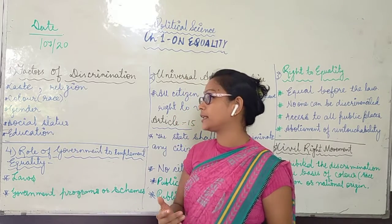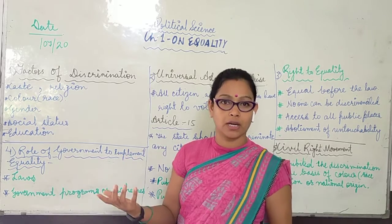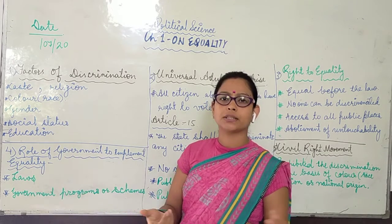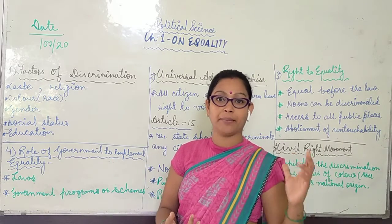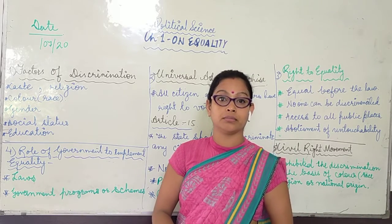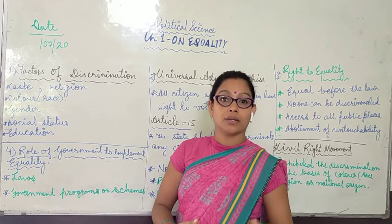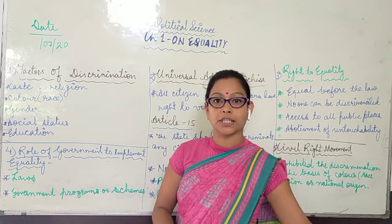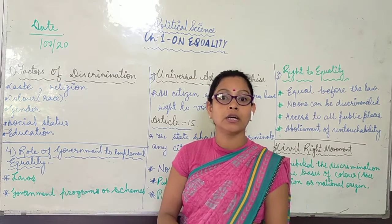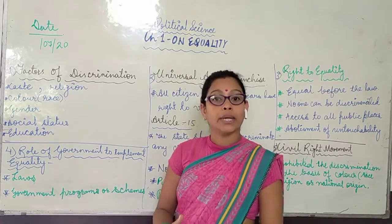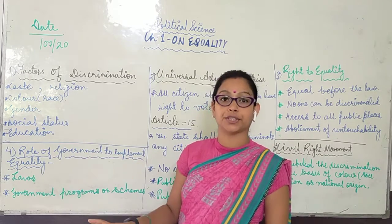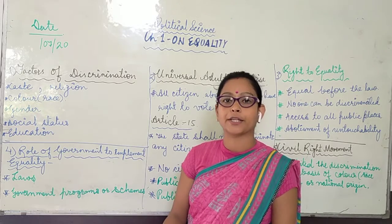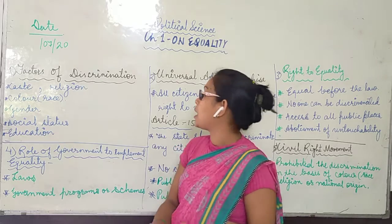The fifth factor is social status. For example, someone who is the owner or managing director of a company is treated with respect and dignity, while someone doing a menial job in the same company is looked down upon and not treated with the same dignity. The sixth factor is education. Citizens also differentiate people on the basis of education — someone who is highly educated is respected, while someone who is not educated is discriminated against and told they are not worthy of respect or dignity. These are the root causes of discrimination.